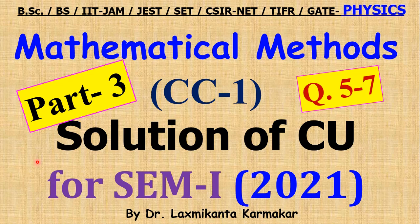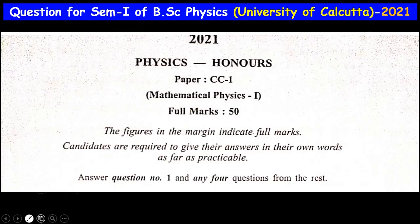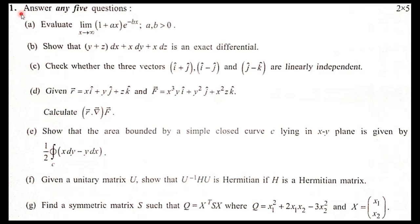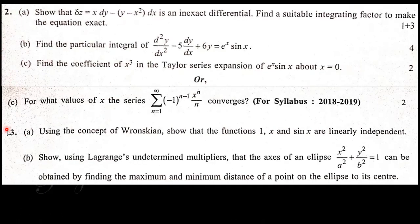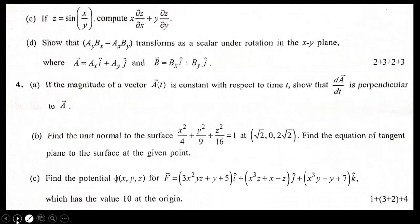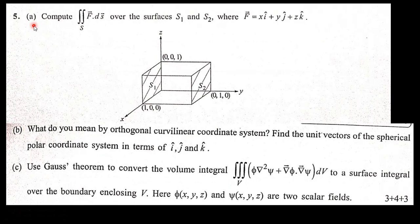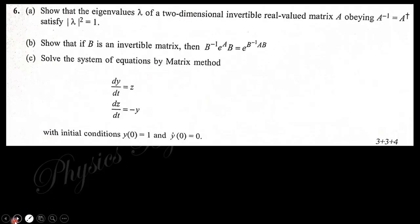Hello, welcome everyone. This is Part 3 for the solution of Mathematical Methods of CC1 paper for Semester 1 for Physics Honours under Calcutta University. This is a question from 2021. We have already completed two parts: Question 1 in Part 1, and Questions 2, 3, and 4 in Part 2. In this part we will discuss Questions 5, 6, and 7.